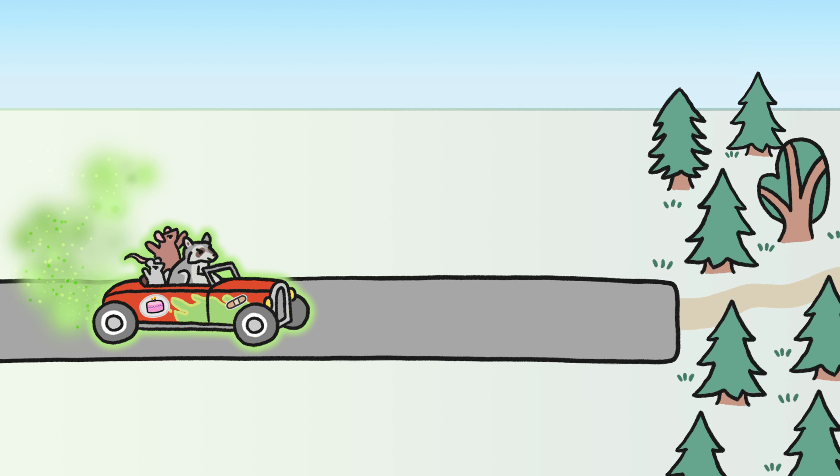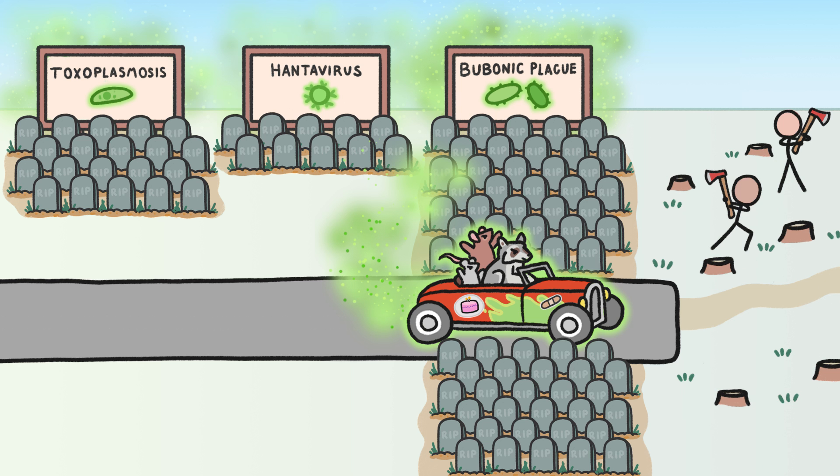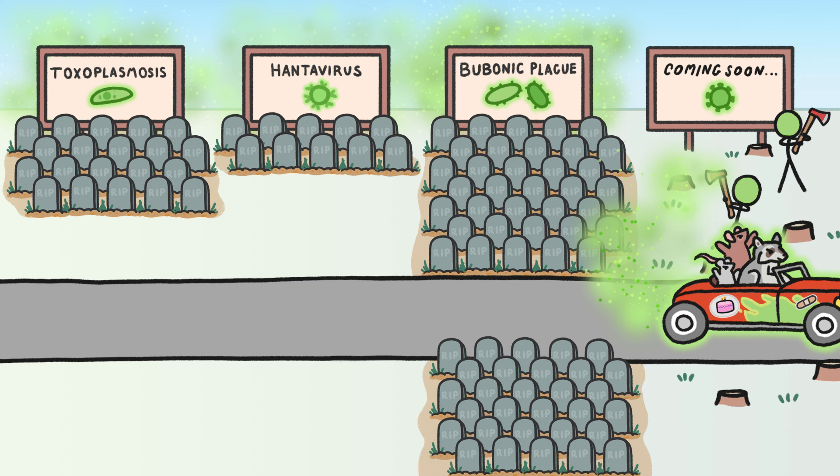Live-fast, die young species like raccoons, mice, and brown rats have been responsible for lots of past outbreaks of diseases, and even pandemics like the Black Death. And as humans continue to disturb natural habitats, scientists expect even more of these outbreaks in the future.